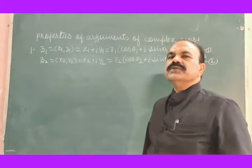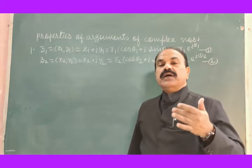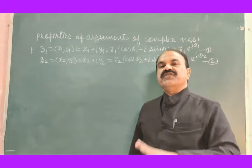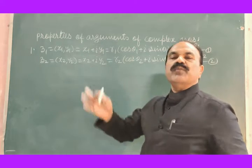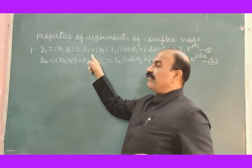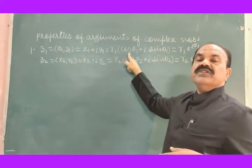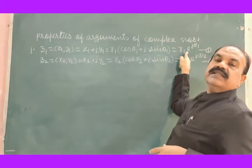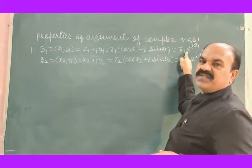We want to verify the first property of arguments, that is, argument of product of two complex numbers is equal to sum of their arguments. To verify this property, we have taken two complex numbers. First complex number Z1 is given by X1 plus iY1 in rectangular form, R1 into bracket cos θ1 plus i sine θ1 in polar form, equal to R1 e to the power iθ1 in exponential form.